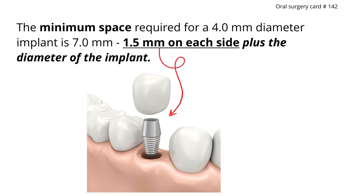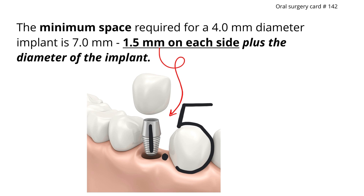The implant looks like the number one, and then we have the gingiva — the space made by the gingiva — we put a dot over it. The adjacent tooth looks like a half circle, and the opposing tooth with its occlusal plane makes a straight line. That straight line with the half circle looks like the number five.